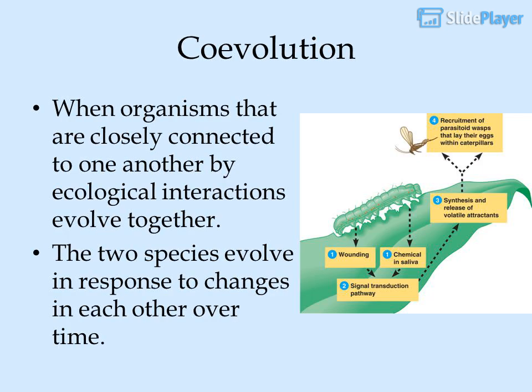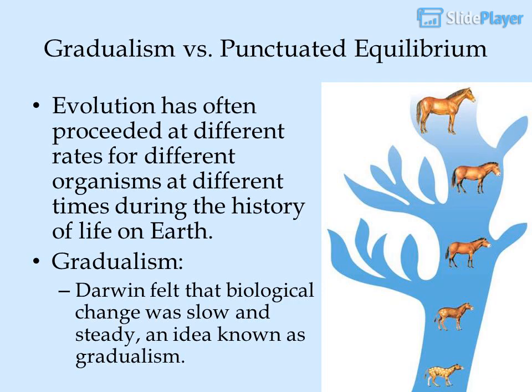Coevolution occurs when organisms that are closely connected by ecological interactions evolve together, with the two species evolving in response to changes in each other over time. Gradualism vs. punctuated equilibrium: evolution has often proceeded at different rates for different organisms at different times during the history of life on Earth. Darwin felt that biological change was slow and steady, an idea known as gradualism.